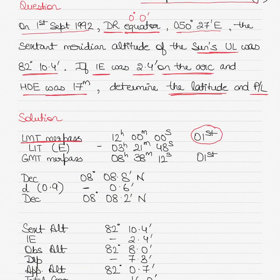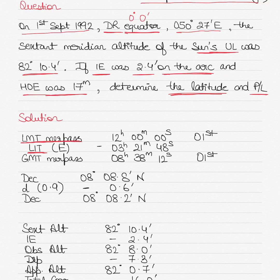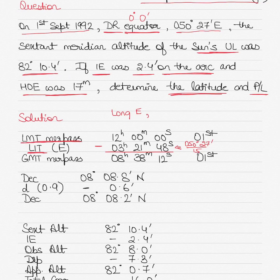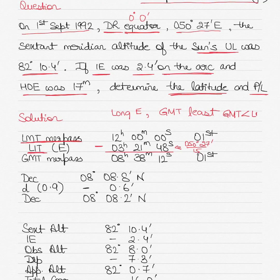Then we apply our longitude in time (LIT), calculated by dividing the longitude by 15. So 050 degrees 27 minutes divided by 15 gives 03 hours 21 minutes 48 seconds. Because longitude is east, GMT will be least — meaning GMT is less than LMT. So we subtract the LIT from the LMT to get GMT meridian passage: 08 hours 38 minutes 12 seconds on 1st of September.